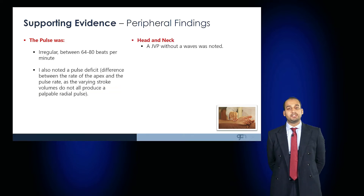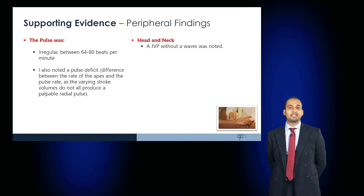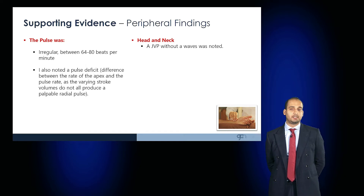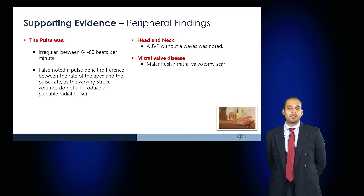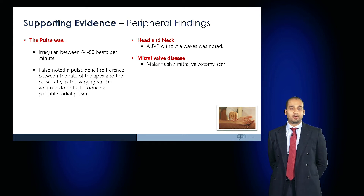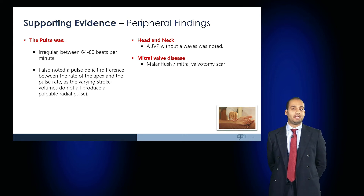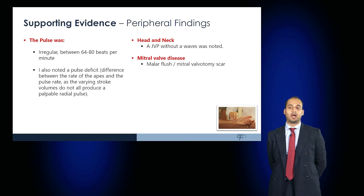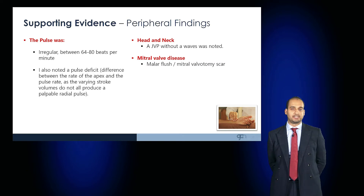The JVP would be noted, but A waves would be absent. If the patient has other conditions such as mitral valve disease or mitral stenosis, you may notice a malar flush, or if they've had correction of their mitral valve disease, a mitral valvulotomy scar may be present.